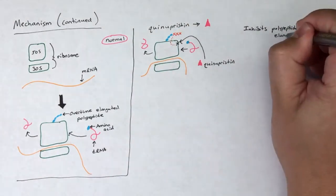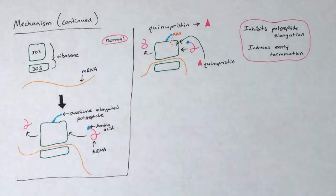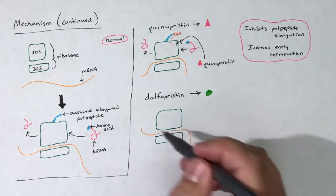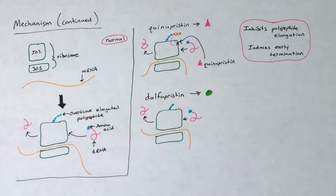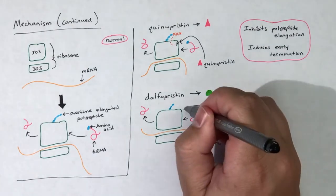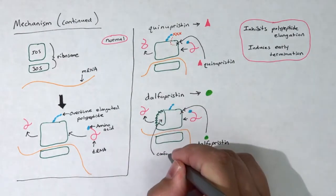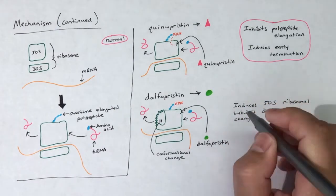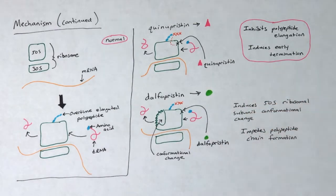Interestingly, Dalfopristin works to enhance or synergize the action of Quinupristin. Dalfopristin also binds to the 50S ribosomal subunit at a nearby site to the Quinupristin site. The binding of Dalfopristin causes the 50S ribosomal subunit to undergo a conformational change, which enhances the binding of Quinupristin.